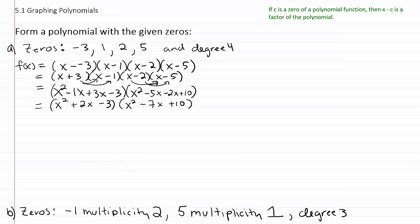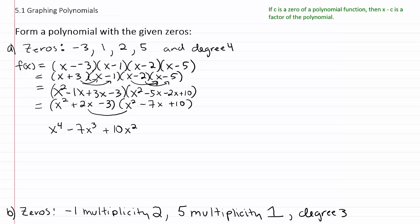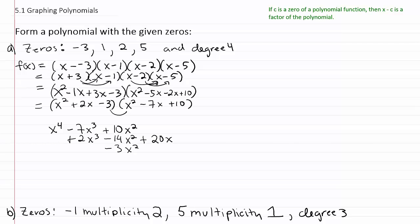Finally, we just need to do the very tedious step of multiplying a trinomial times a trinomial, which is going to produce nine terms. Starting with x squared times everything: x squared times x squared gives x to the fourth, x squared times negative seven x gives negative seven x cubed, and x squared times ten gives positive ten x squared. Then two x times x squared gives positive two x cubed, two x times negative seven x gives negative fourteen x squared, and two x times ten gives plus twenty x. Finally, negative three times x squared gives minus three x squared, negative three times negative seven x gives positive twenty-one x, and negative three times ten is negative thirty.